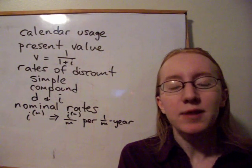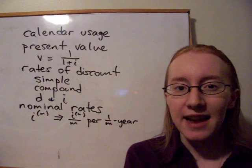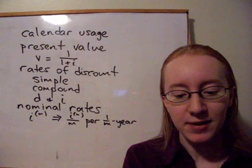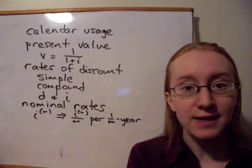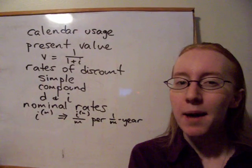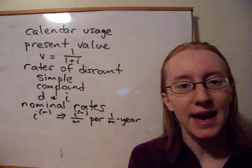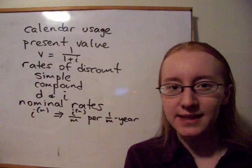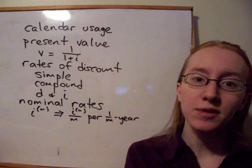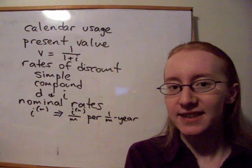The next thing we looked at was rates of discount. And discount is similar to interest in that we can have all sorts of different kinds. We can have simple, we can have compound, we can talk about an effective rate of discount for a certain period. But with discount, we're essentially paying the interest in advance. So if we have a payment at time 0 of 1 minus D, that will grow to 1 by time 1.